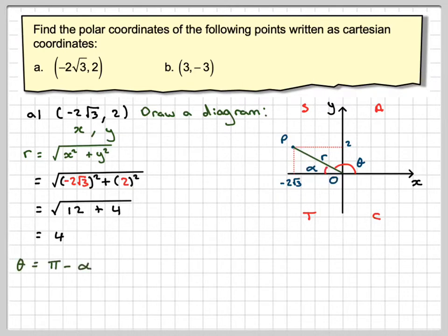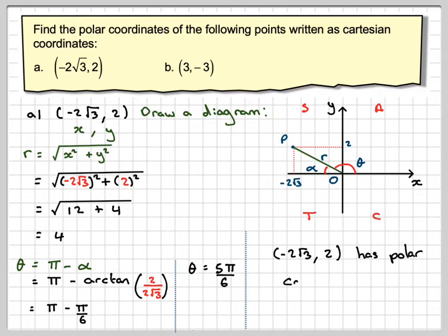To find the angle, it might be good to find this angle here first and take it away from π, because θ would be the same as doing π - α. So that would be π - arctan(2/x value). Don't worry about the negative sign here, we can completely ignore it. This will give me arctan(1/√3) once we've cancelled it down, which gives me π/6. So π - π/6 gives me 5π/6, and therefore (-2√3, 2) will have polar coordinates (4, 5π/6).